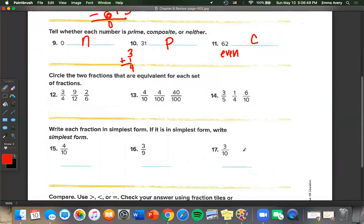So circle two fractions that are equivalent for each set of fractions. So we have 3 fourths, 9 sixths, and 9 twelfths, and 2 sixths. First we're going to want to put all of these with the same denominator. So 12 is going to be our denominator. So 3 fourths times 3 over 3 gives us 9 twelfths. So 3 fourths and 9 twelfths are equal. 2 sixths times 2 is only 4 twelfths, so this is not equal.